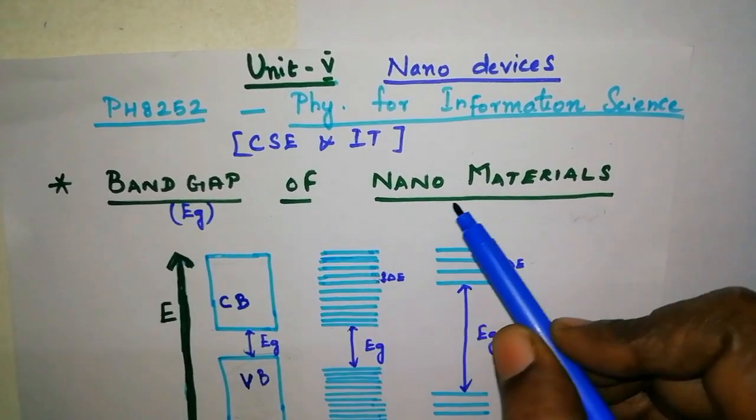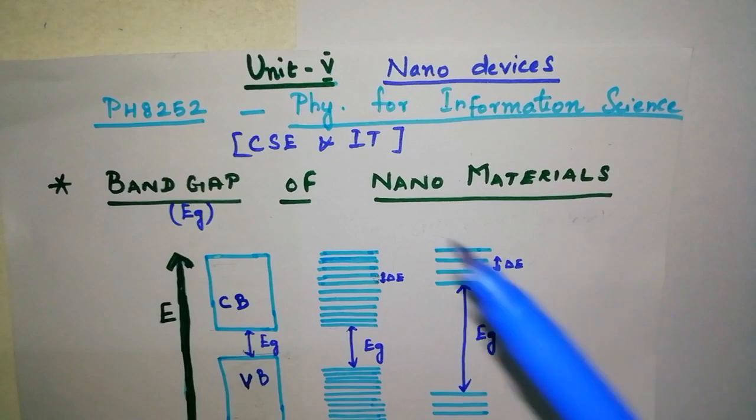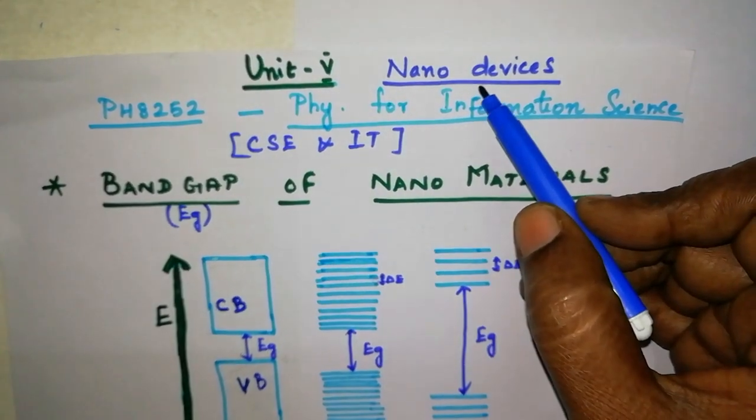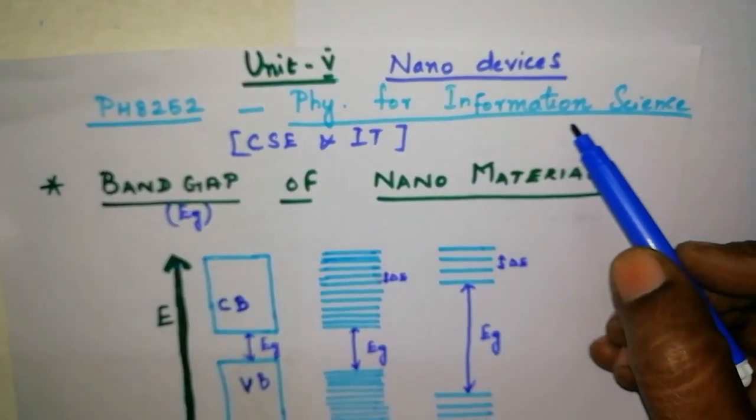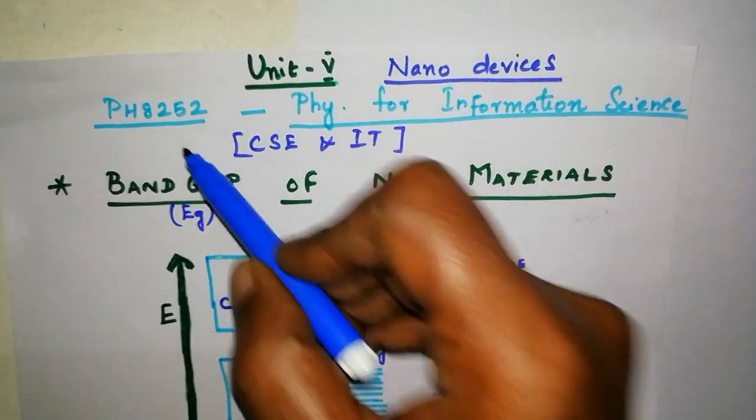Today's topic is Band Gap of Nanomaterials. In Unit 5, Nanodevices, the subject name is Physics for Information Science and the subject code is PH8252.